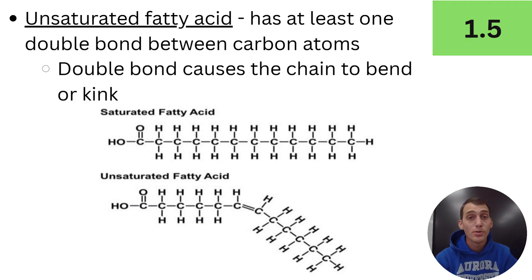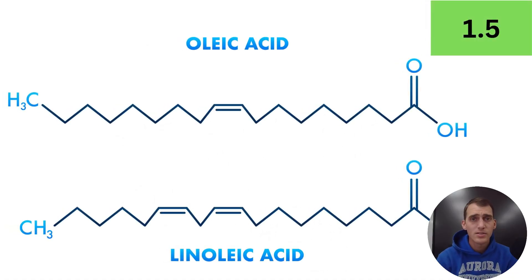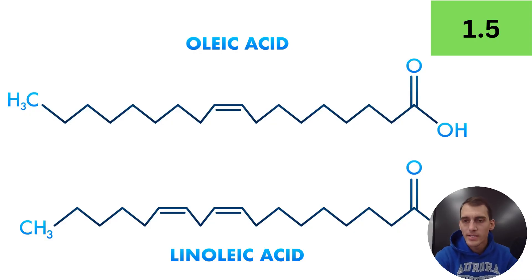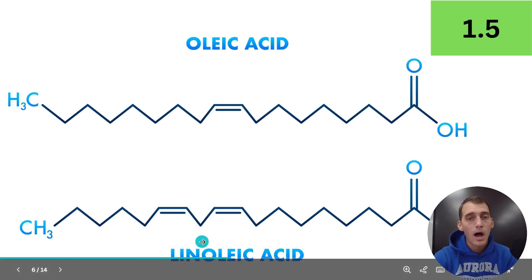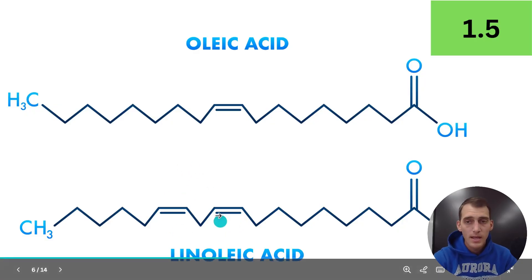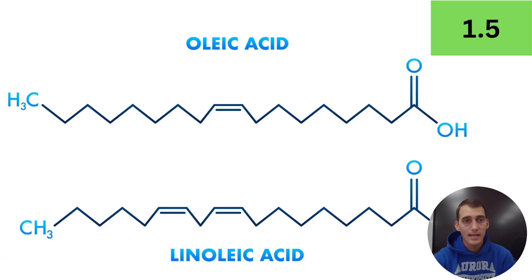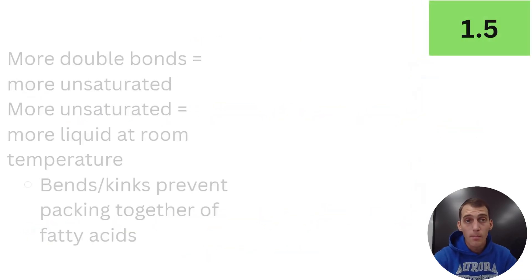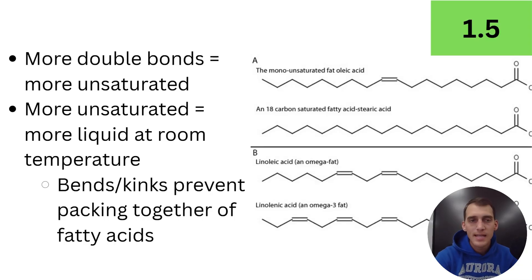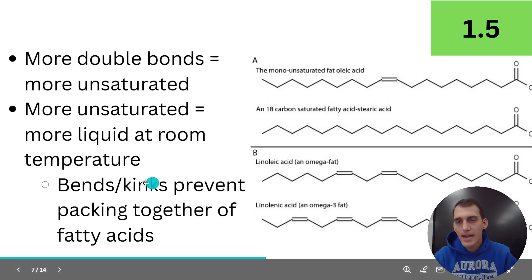Here are some examples of unsaturated fatty acids. Oleic acid up here is what we would call a monounsaturated fatty acid — mono means one, so it's got one double bond. Linoleic acid down here is a polyunsaturated fatty acid — poly meaning many — because it has more than one double bond between the carbons in the fatty acid chain. The more double bonds that an unsaturated fatty acid has, the more unsaturated it is.